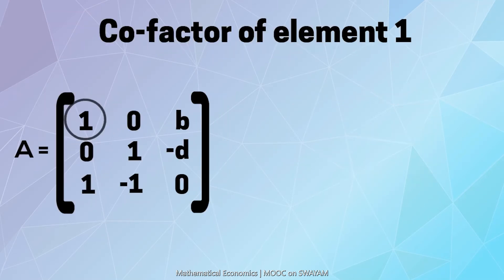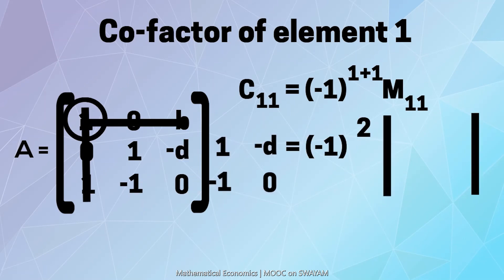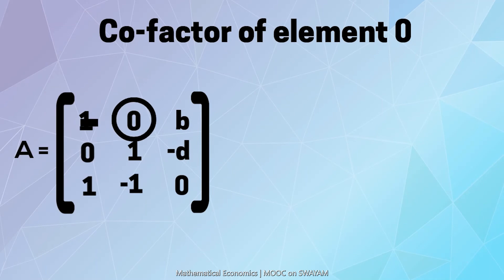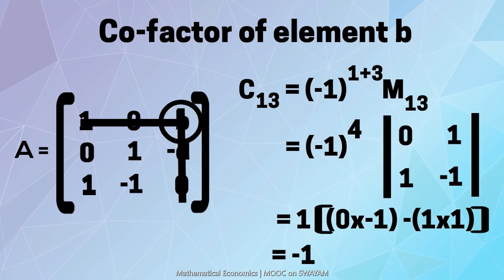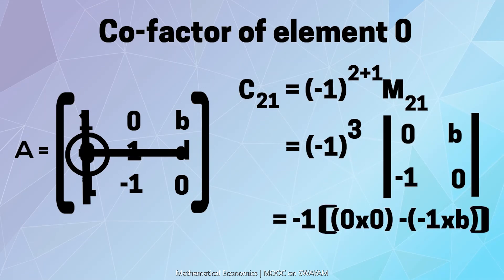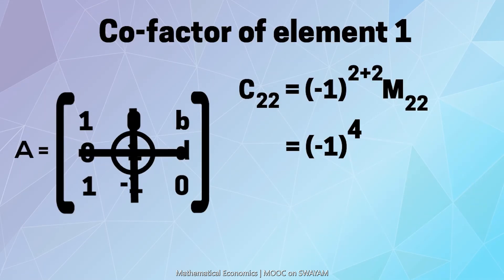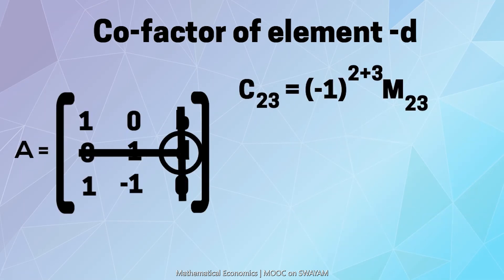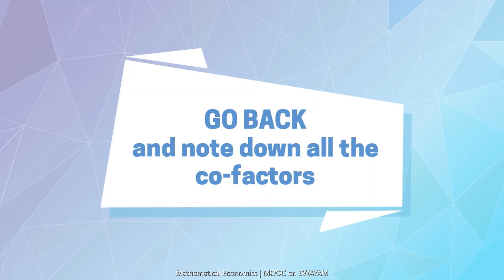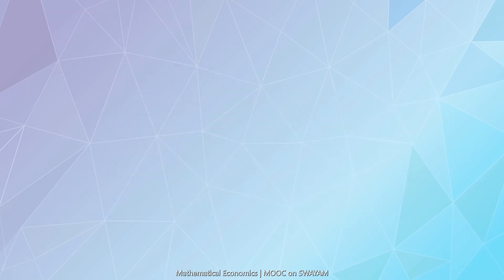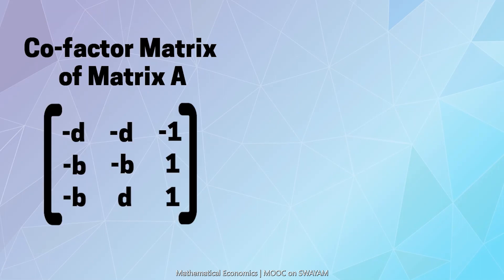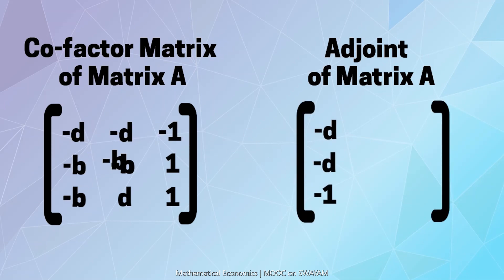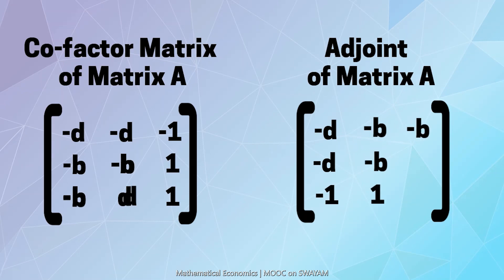Now by using the cofactor formula, the cofactor of the element 1 is minus D. The cofactors of the remaining elements of the coefficient matrix A is obtained by using the same formula. I would want you to go back and note down all the cofactors. So this is the cofactor matrix of matrix A that we have just obtained. And adjoint of A is given by transposing the cofactor matrix, that is by interchanging the rows and columns.